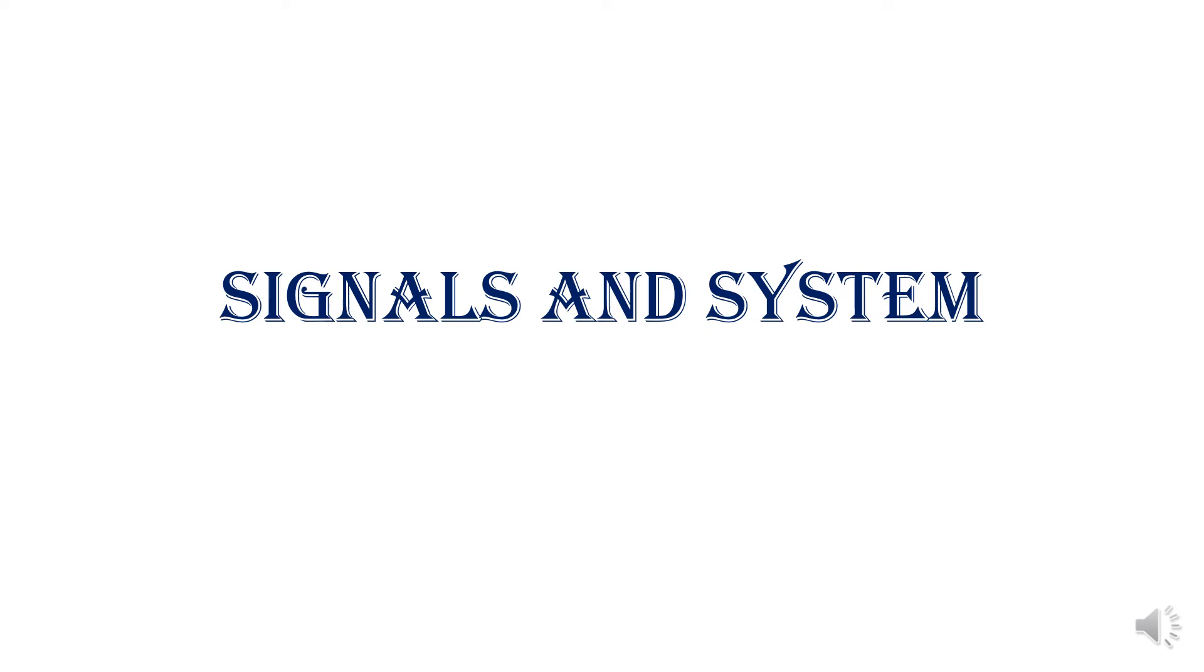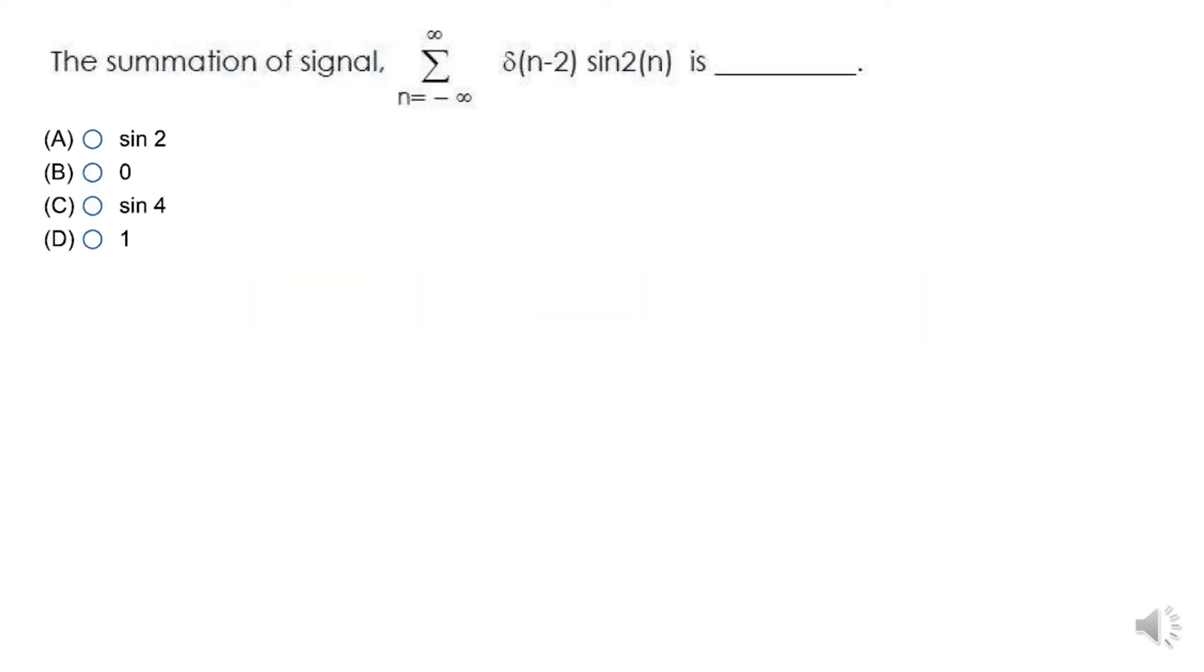Pleasant greetings to all. In this video, I am going to explain a problem in signals and systems. See the problem: the summation from n equals minus infinity to infinity of delta(n minus 2) times sin(2n).